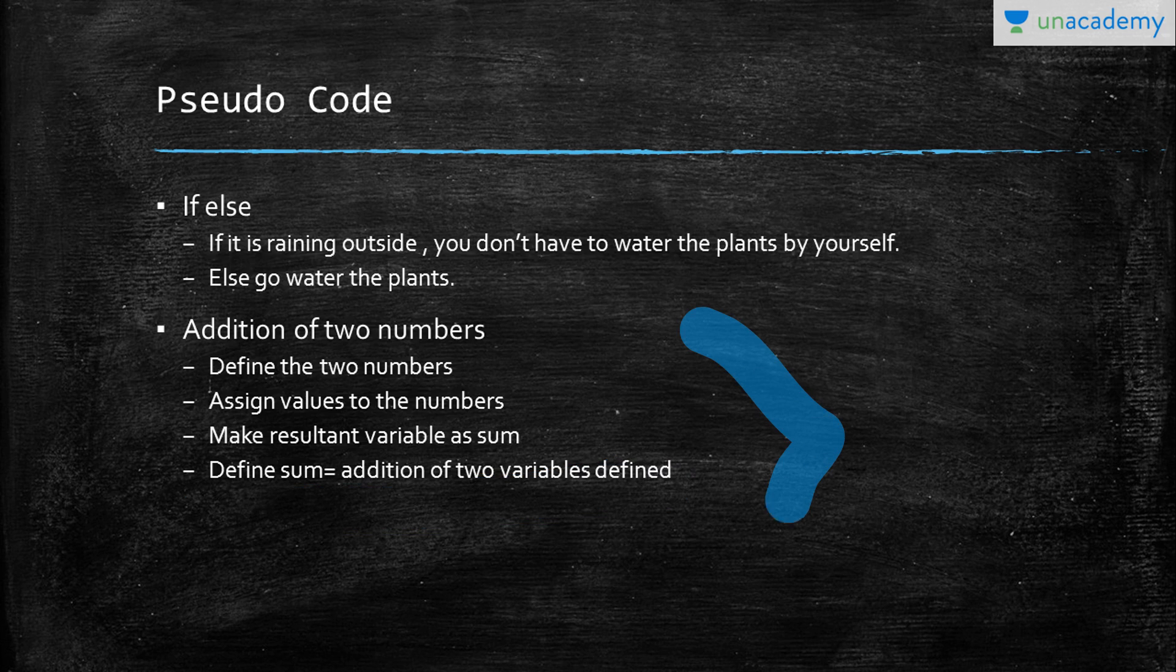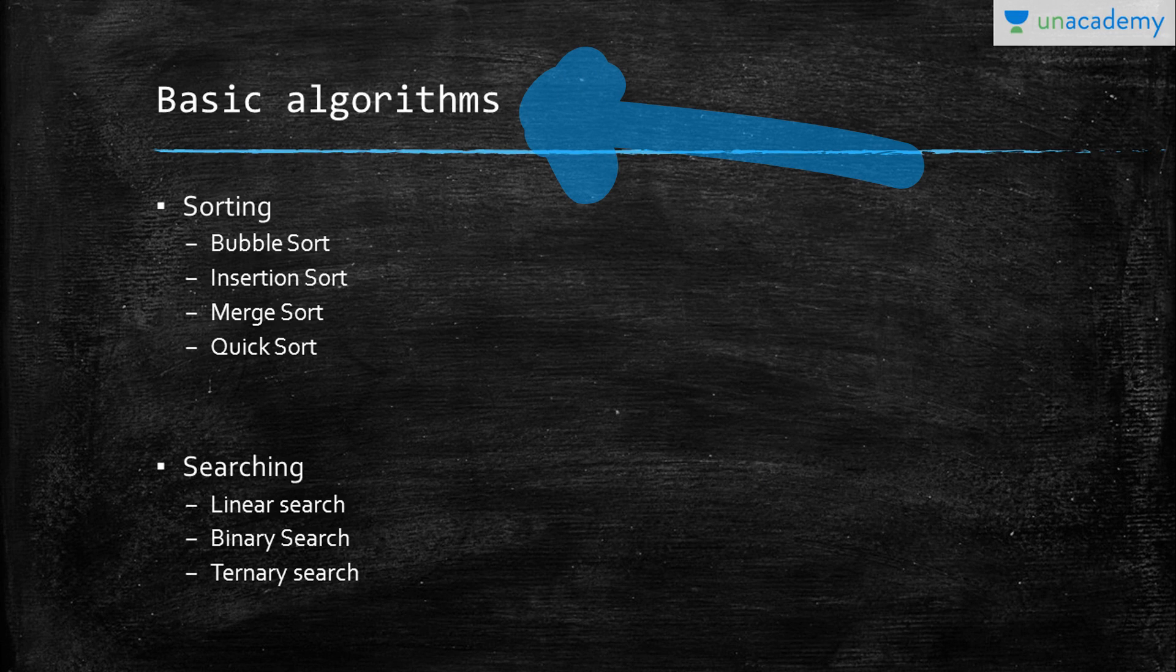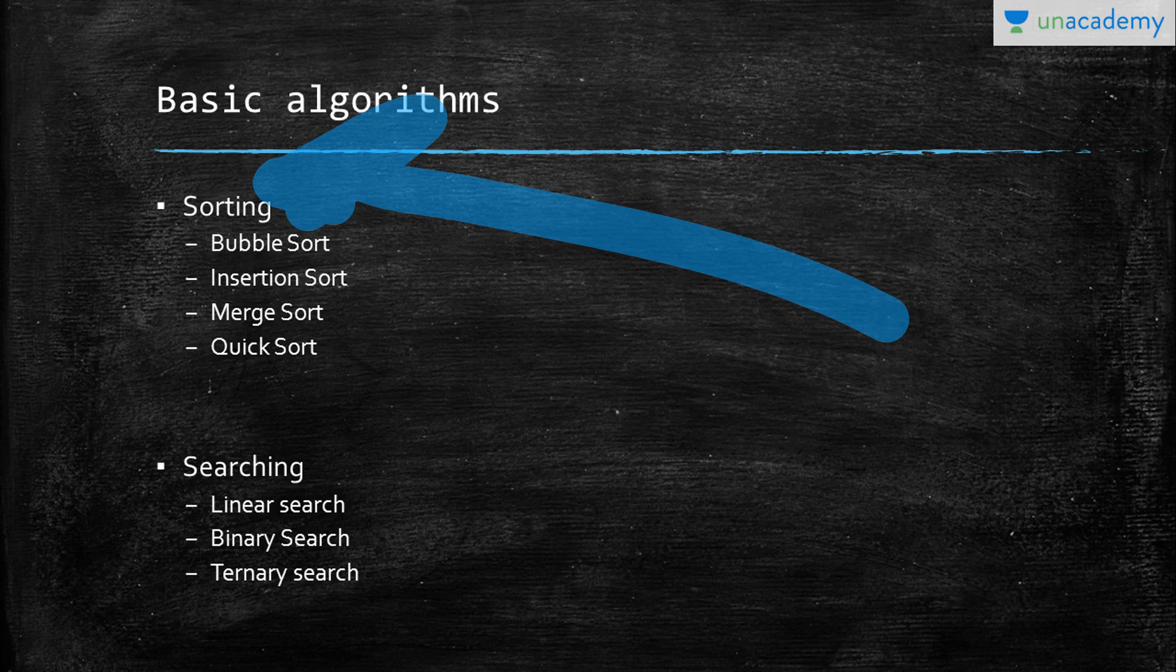This is an example of a perfect pseudo code that we can assign in algorithms. Moving on, some of the basic algorithms that we need to know—algorithms and data structures play the most important role in programming languages. Here are some of the algorithms you should be knowing.